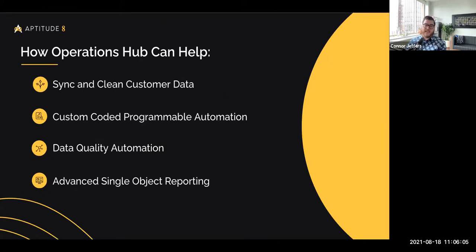In terms of ways that Operations Hub can be used, if you're a current or prospective HubSpot customer, you can use it to sync and clean existing data inside the HubSpot CRM. You can leverage custom coded programmable automation — building JavaScript code directly into your workflows — and also do data quality automation and enhance reporting capabilities.